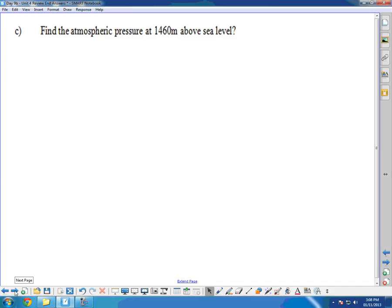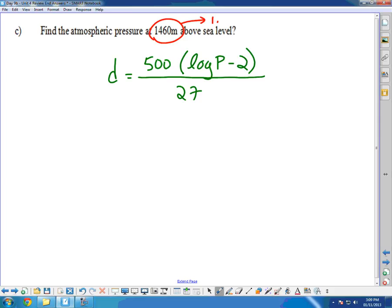And our last one is atmospheric pressure. So in atmospheric pressure, the formula is given to us: D equals 500 log P minus 2 all over 27. There's only two types of questions here. The one where I give you the pressure and you need to figure out the distance. This one, I'm giving you the distance, you need to figure out the pressure. Of course, the key on this one is remember, the only way I can try and trick you is give this to you in meters, and it has to be in kilometers. So we divide it by 1,000 to get kilometers. That puts us at 1.46 equals 500 log P minus 2 over 27.